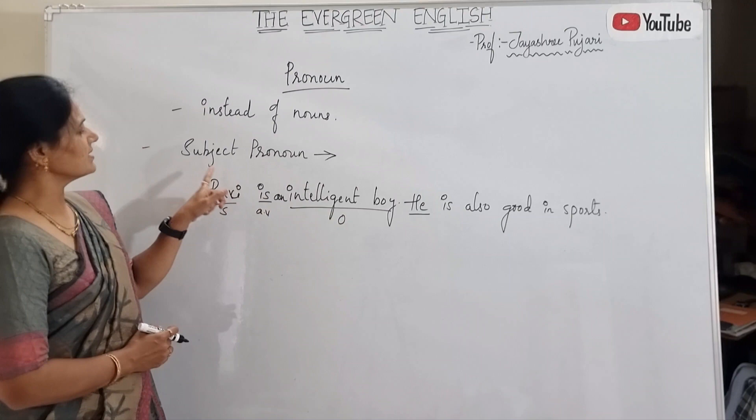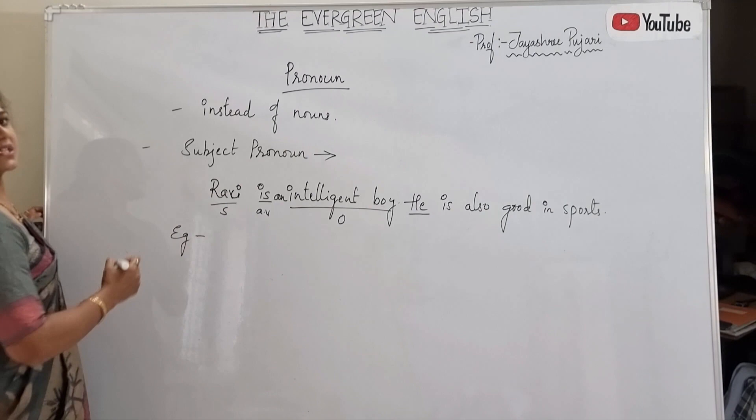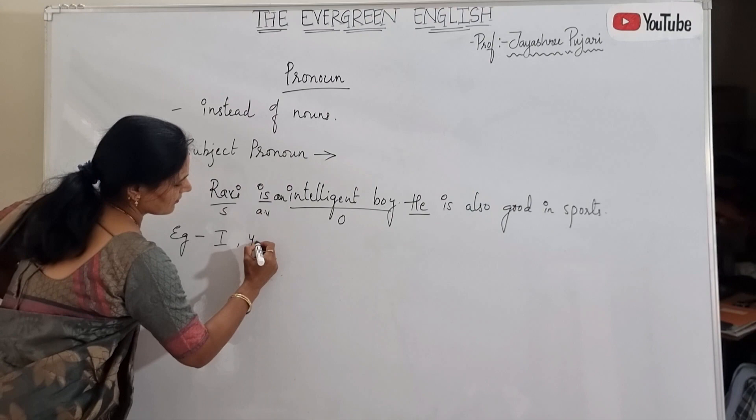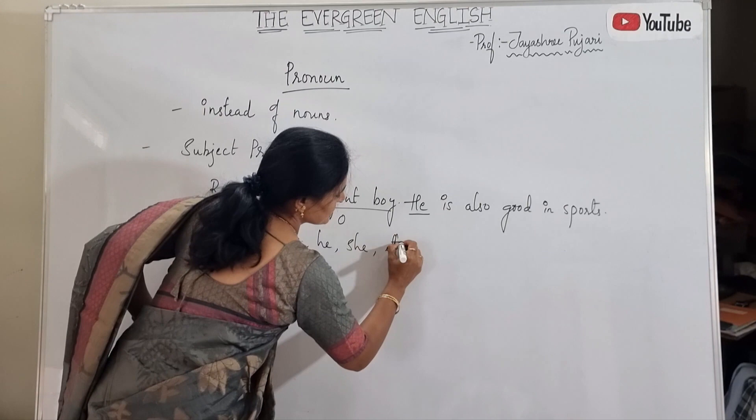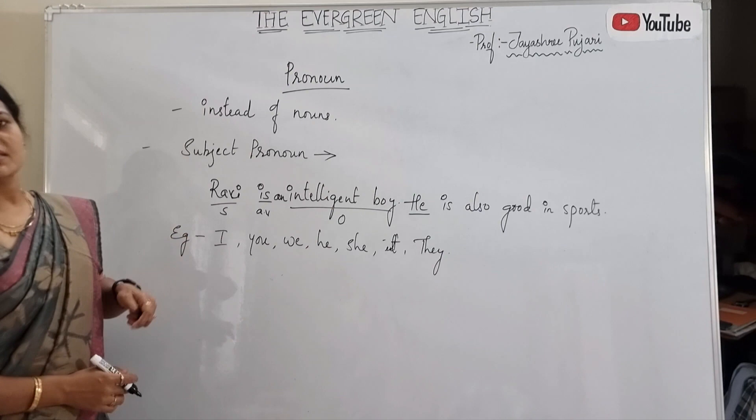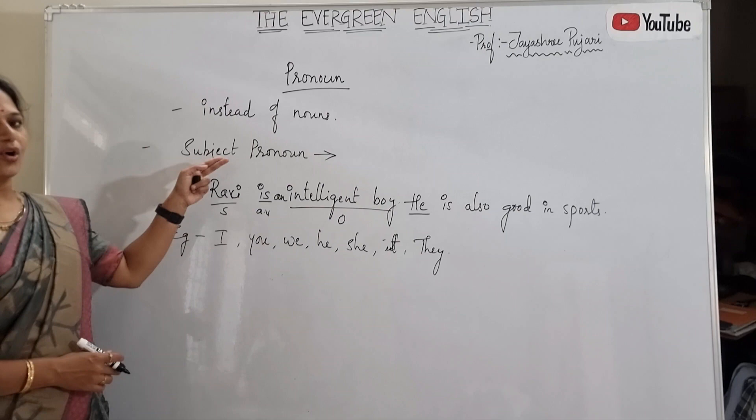Examples of subject pronouns are: I, you, we, he, she, it, and they. These pronouns take the place of the subject, so they are called subject pronouns.